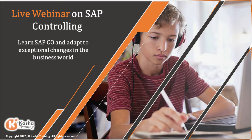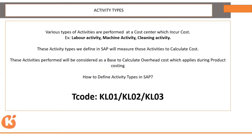In today's class, we are going to create activity types — various activity types such as labor activity, machine hour, and setting up of machines — in SAP. We have to create an activity master data for that. These are helpful for calculating overheads, which are called overhead costs when doing product costing, because these are the costs incurred for manufacturing a certain product — finished goods or semi-finished goods. We need to find out what cost is incurred by these activities. The various types of activities performed at a cost center which incur cost are called activity types.